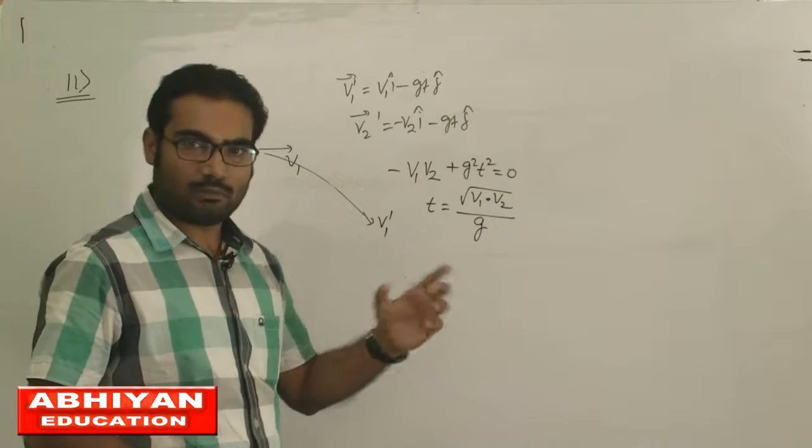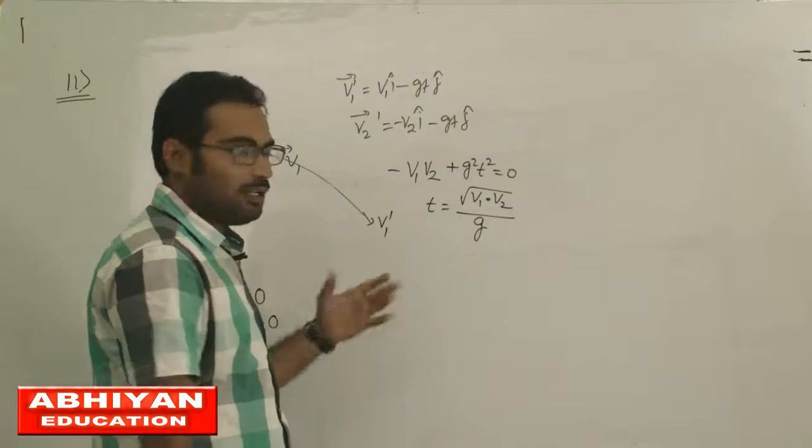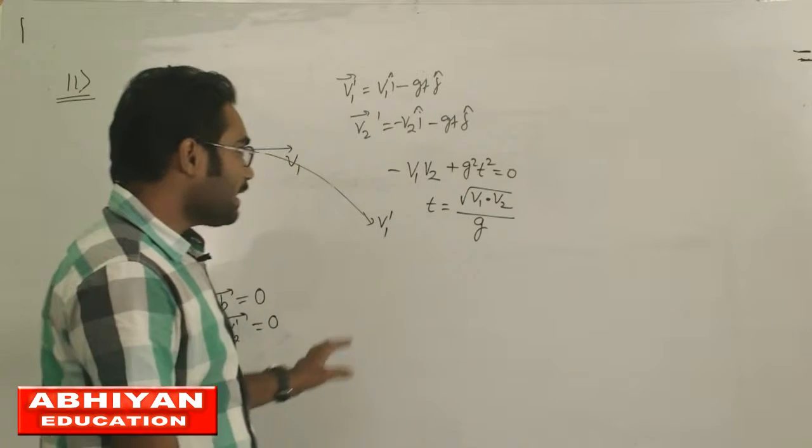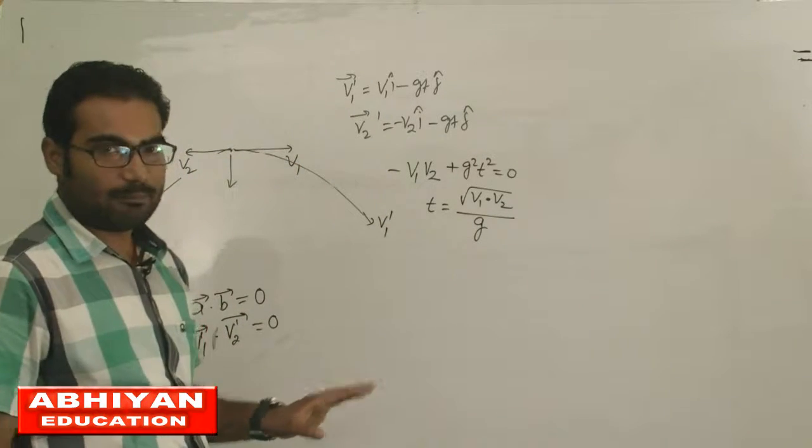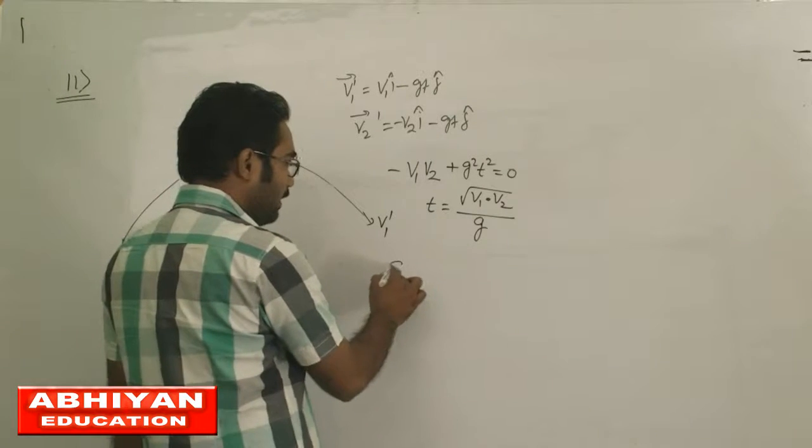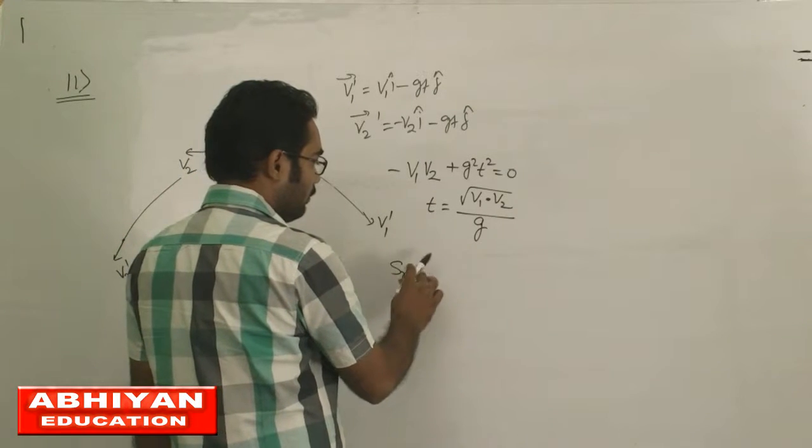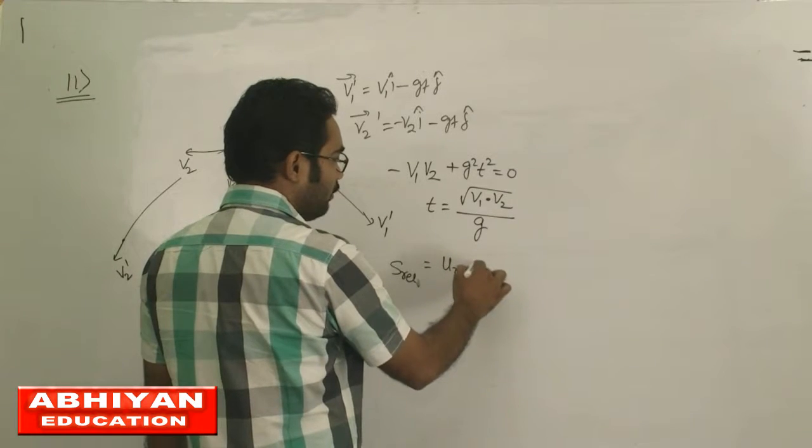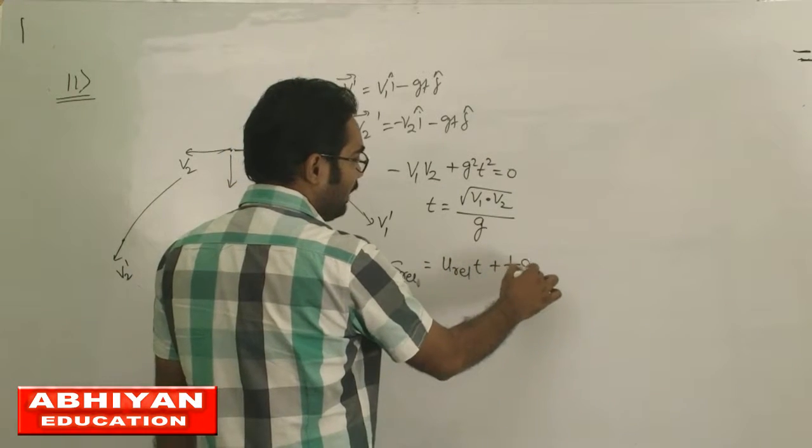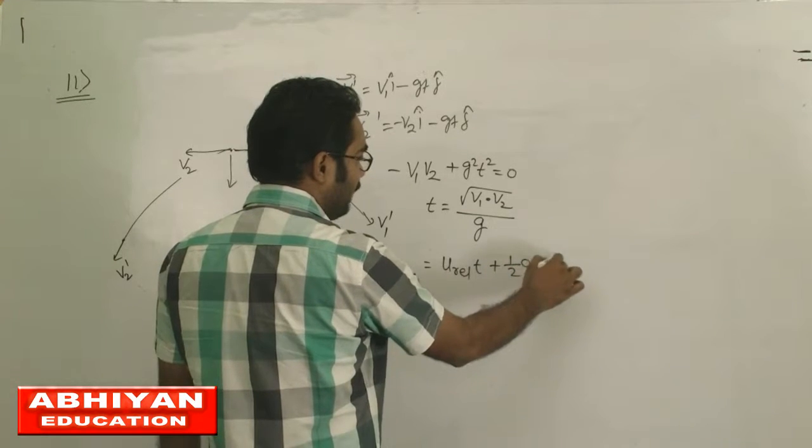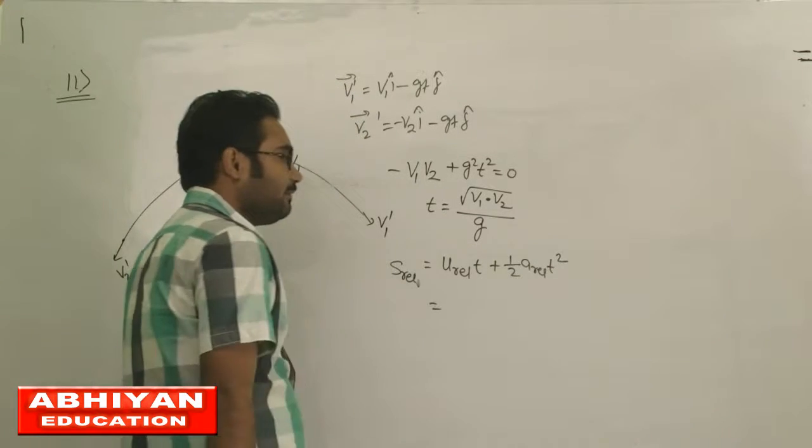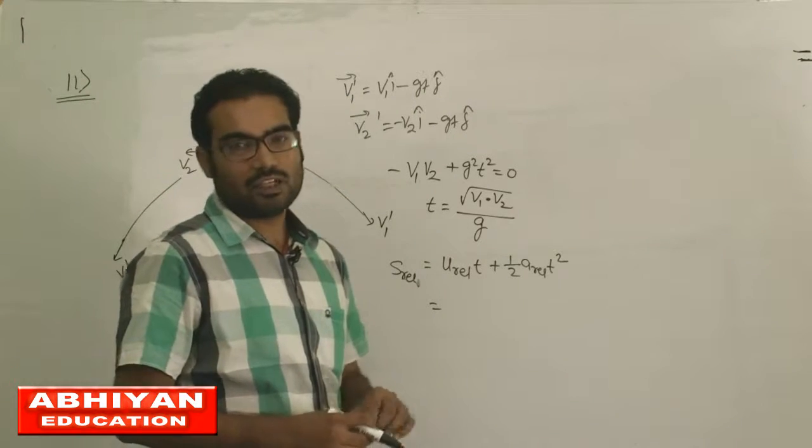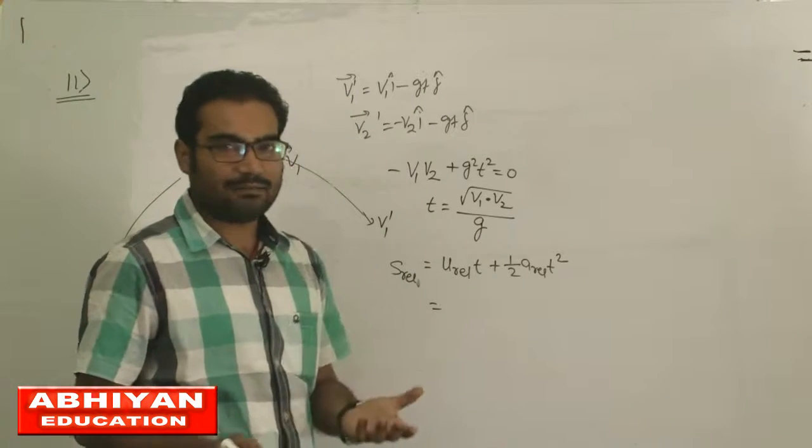Now calculate the separation between them. S relative equals to u relative into t plus half a relative into t square. The a relative is what? Both have the same downward acceleration g, so a relative value is zero.